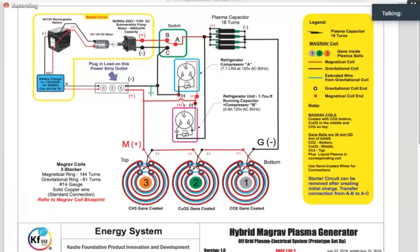So as you see, those who already have the Magrav units, you can use them by simply adding other components that is shown above. We have on the upper left, below the starter circuit, we have our power strip where we connect our load. And on the right side of that power strip, we have the pink box, a refrigerator, represented by the box.